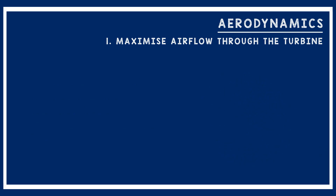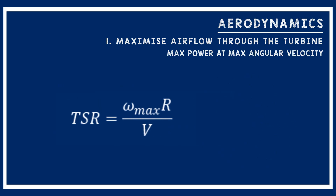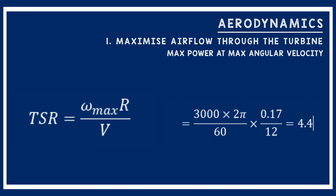We started with the assumption that maximum power will be produced at the maximum angular velocity of 3,000 rpm at 12 m/s wind speed. Taking a maximum radius of 17.5 cm from the dimensional constraints, we calculated an optimum tip speed ratio of 4.4.